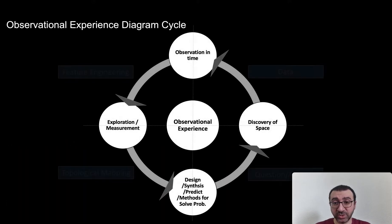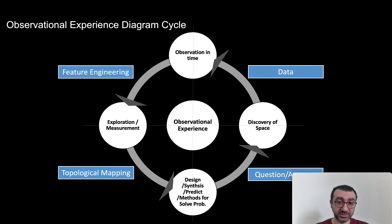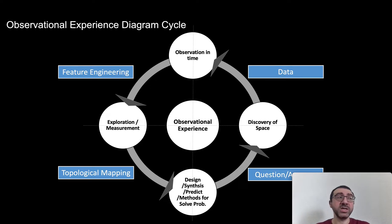Then you ask: what kind of question do I want to ask about this face? Maybe you want to correlate the movement of these feature points with whether the person is happy or sad — how do you define that? Or maybe you want to synthesize new faces. These are the kinds of questions that arise.